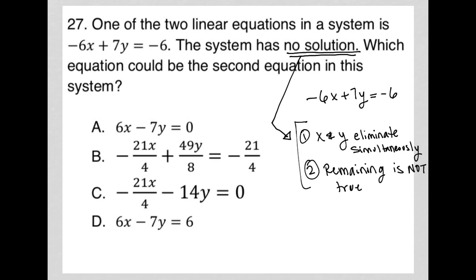So these are our two criteria for a system of equations having no solution. So the question says, which equation could be the second equation in this system? All right. Well, I think I see it.